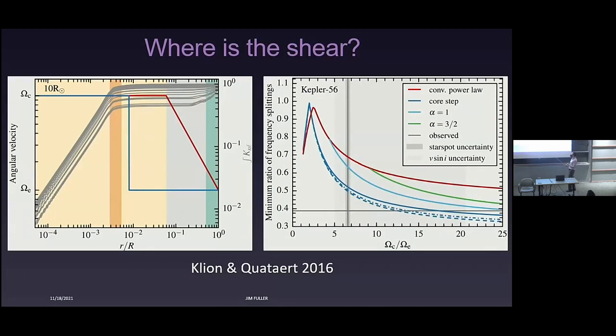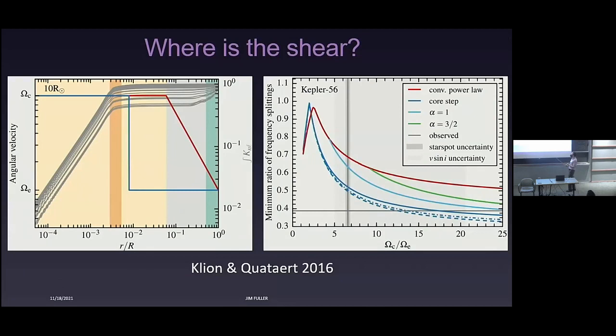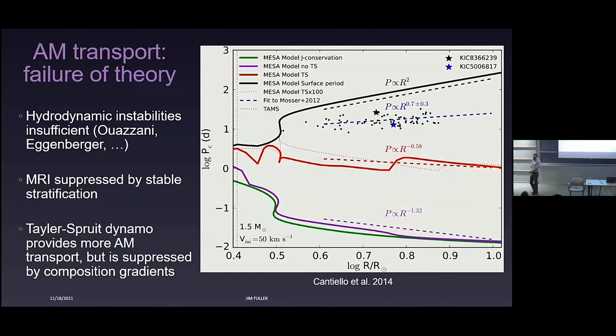Exactly where the differential rotation exists in these stars is not clear — it's not clear if it's in the convective envelope or somewhere deeper in the core. A nice paper by Hannah Kleon and Elliot Quataert attempted to constrain this, inferring that the differential rotation is probably mostly in the radiative core. But this is for one star, and it's very difficult to actually localize where the shear in the star actually is.